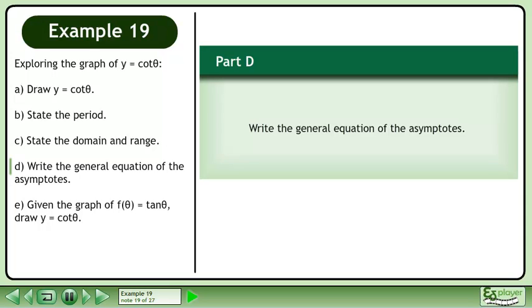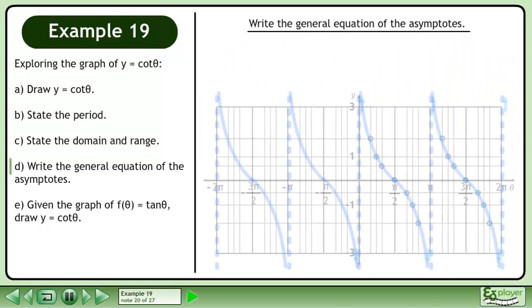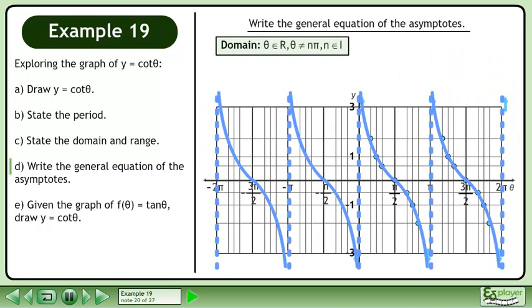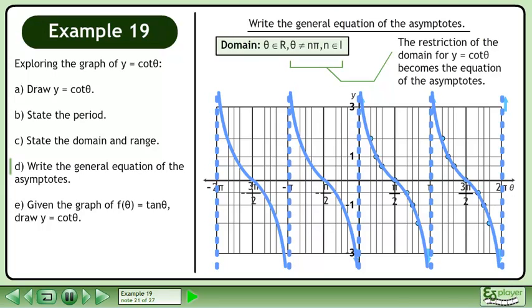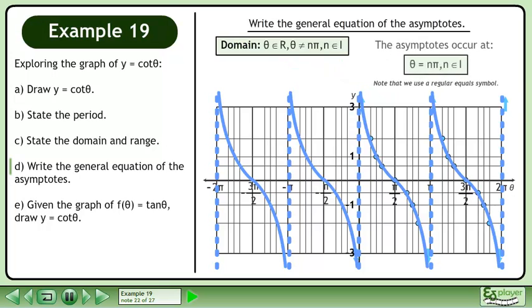In Part D, write the general equation of the asymptotes. Bring up the graph and the domain. The restriction of the domain for y equals cotan theta becomes the equation of the asymptotes. The asymptotes occur at theta equals n pi, where n belongs to the set of integers.